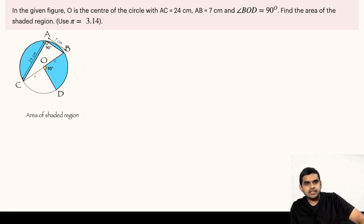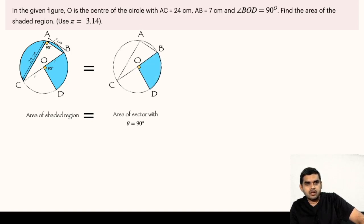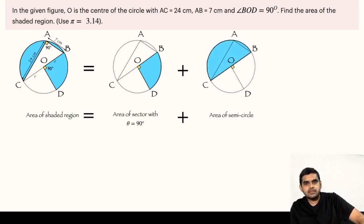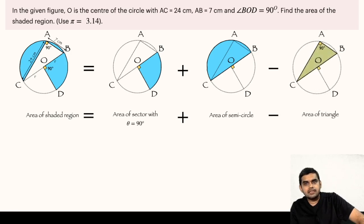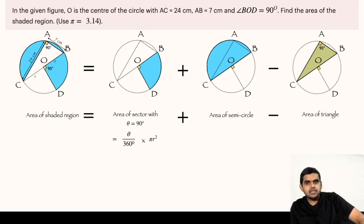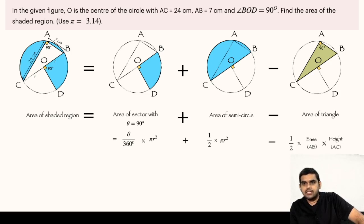Now let us compute the area of the shaded region. The area of the shaded region equals the area of this sector plus the area of this semicircle, minus the area of triangle CAB, which is a right angle triangle. The formula for area of a sector is theta divided by 360 degrees multiplied by pi times r squared. The area of the semicircle will be half pi r squared, and we subtract the area of the triangle, which is half times base times altitude. Here we can take base as AB and altitude as AC.